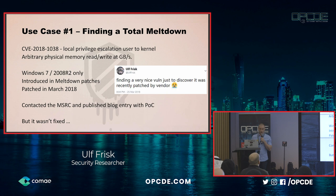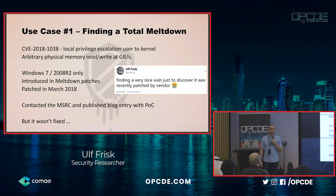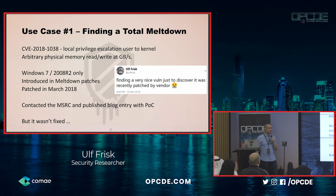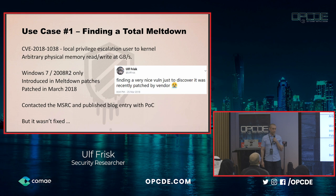Let's look at how I used an early version of the Memory Process File System to locate a Total Meltdown in Windows 7. It was a local privilege escalation vulnerability that allowed any user to escalate to the kernel trivially. It allowed arbitrary physical memory reads and writes at gigabytes per second. It only affected Windows 7 and 2008 R2, and it was something introduced in the meltdown patches from January last year.